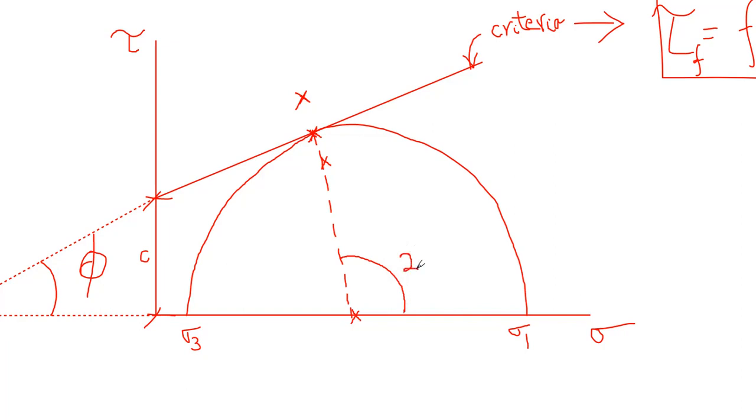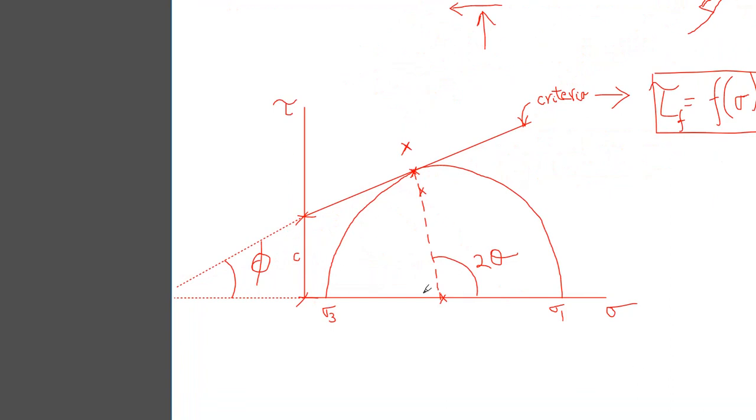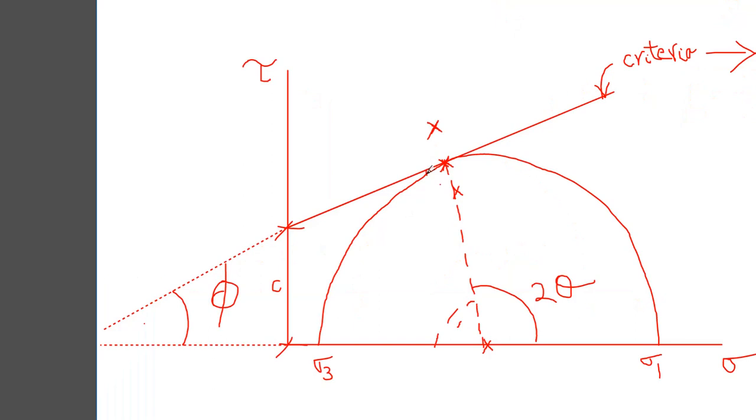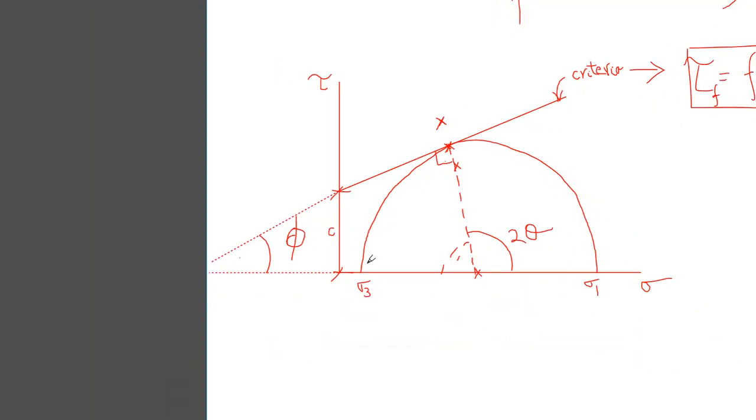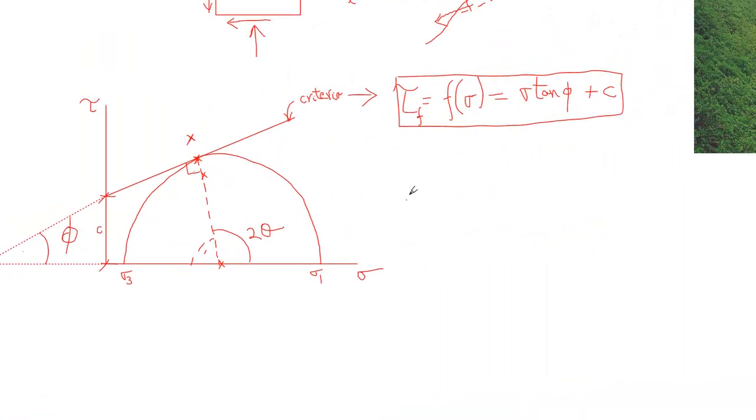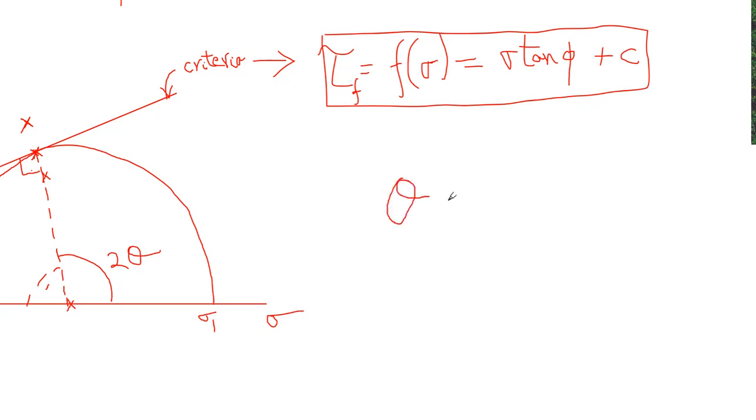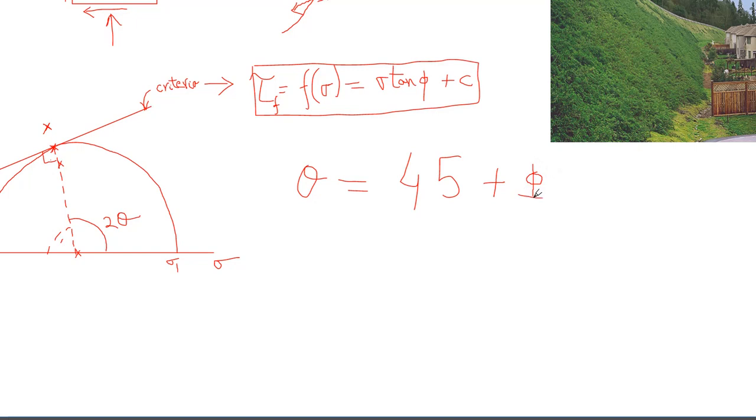And now, just based on this figure, we can already see the relationship between phi and theta. We know this is 180 degrees minus 2 theta, and we know sum of angles is 180 degrees, where for this tangent it is 90 degrees. We know that our angle is going to finally come out to be theta equals 45 plus phi over 2.